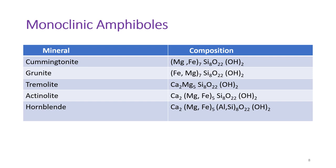Coming to the monoclinic amphiboles: cummingtonite has a chemical composition of hydrated magnesium iron silicate; grunerite has a hydrated iron magnesium silicate; tremolite has a hydrated calcium magnesium silicate; actinolite has a hydrated calcium magnesium iron silicate; and hornblende is a hydrated calcium magnesium iron aluminium silicate. All these belong to the monoclinic system and are therefore known as monoclinic amphiboles.